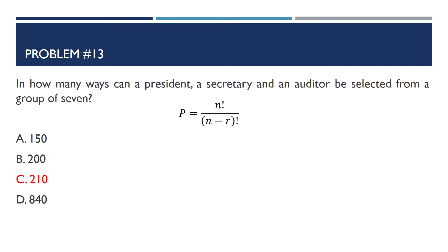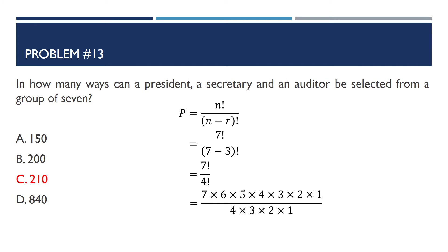We use the permutation formula: n factorial over (n minus r) factorial. N is 7 and r is 3 (the number of positions), so we have 7 factorial over 4 factorial. Expanding: 7 × 6 × 5 × 4 × 3 × 2 × 1 over 4 × 3 × 2 × 1. We cancel the common terms 4, 3, 2, and 1, leaving 7 × 6 × 5, which equals 210.